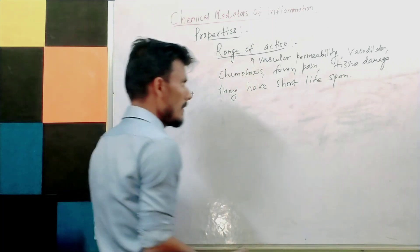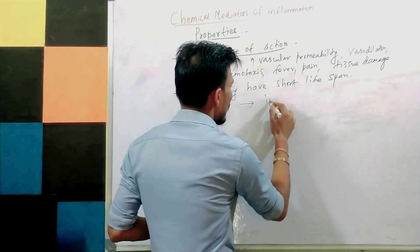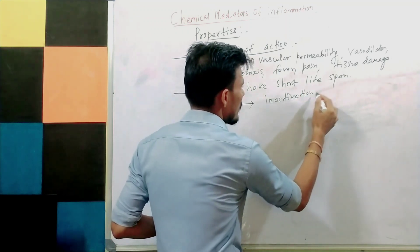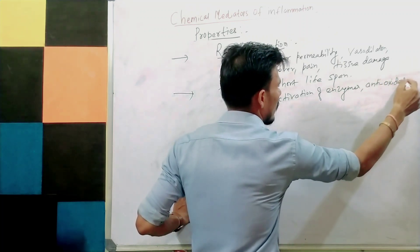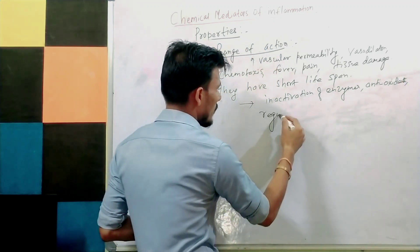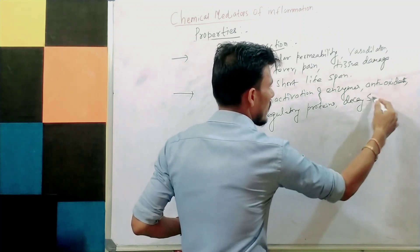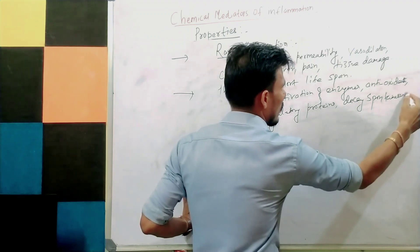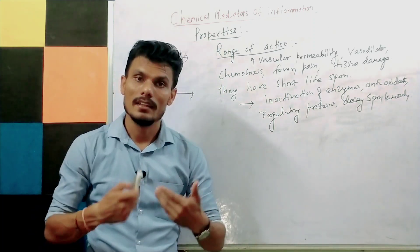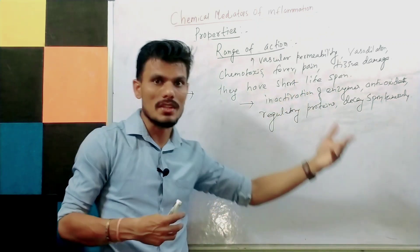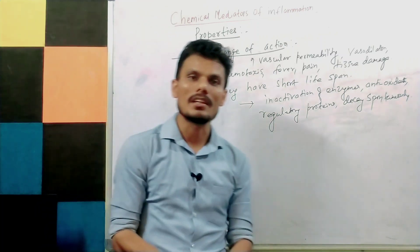If we talk about the lifespan of chemical mediators, they have a short lifespan and are inactivated or removed by: inactivation by enzymes, by antioxidants, by regulatory proteins, or they can decay spontaneously after release. Because they mediate the process of inflammation, they have a shorter lifespan and are removed by these mechanisms.